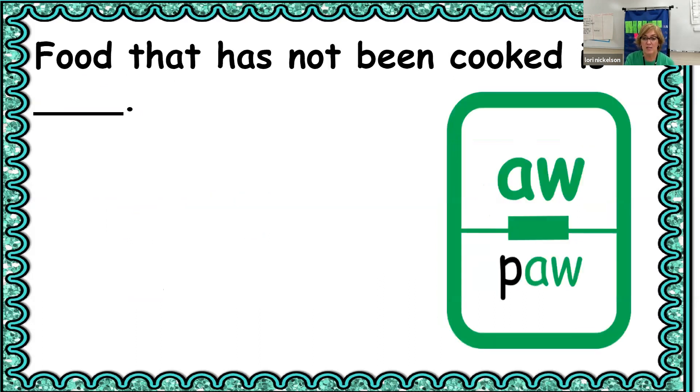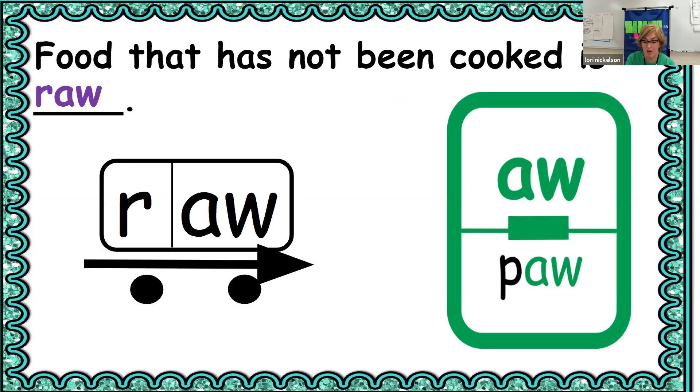Food that has not been cooked is raw. It has the aw sound. How many sounds is in raw? R-A-W. Two. Two sounds. Awesome.